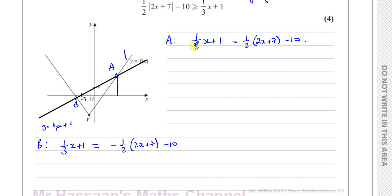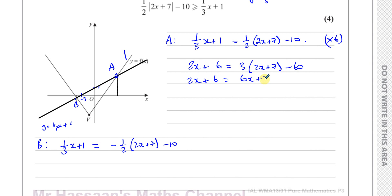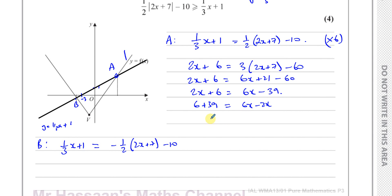To solve for A, multiply through by 6 to eliminate fractions. 6 times a third gives 2X, 6 times 1 gives 6, 6 times a half gives 3, and 6 times negative 10 gives negative 60. So: 2X plus 6 equals 6X plus 21 minus 60, which simplifies to 2X plus 6 equals 6X minus 39. Adding 39 to both sides: 45 equals 4X, so X equals 45 over 4.